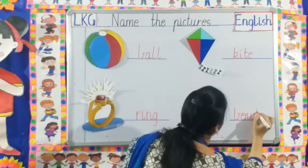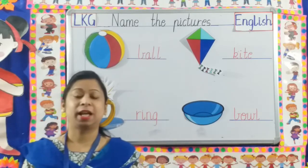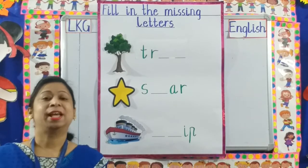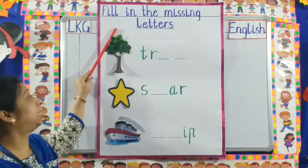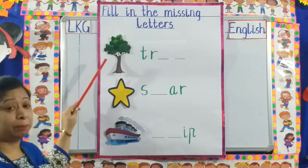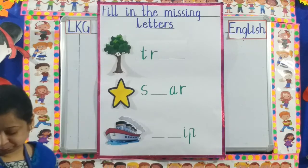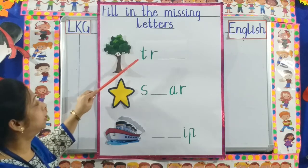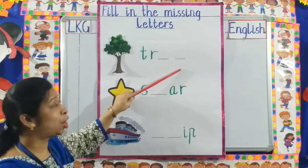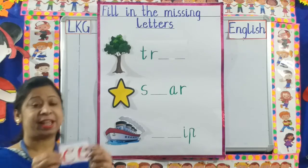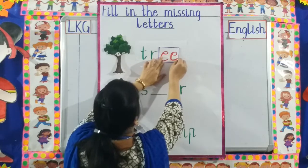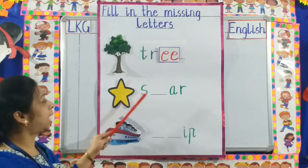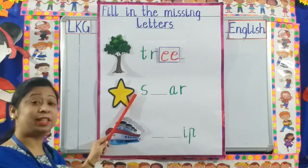Children, this is how you are going to write — name the pictures. The next topic is fill in the missing letters. Here you have to see the picture and fill in the letters that are missing. The first picture — what is it? Yes — tree: T-R-dash-dash. What is missing, children? Yes — E-E. T-R-E-E, tree. Next picture — star: S-dash-A-R. What is missing, children?